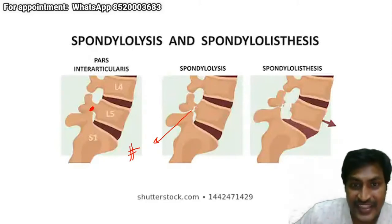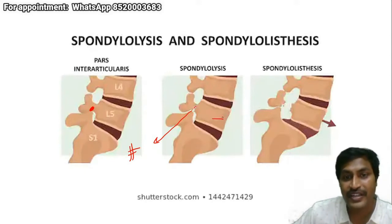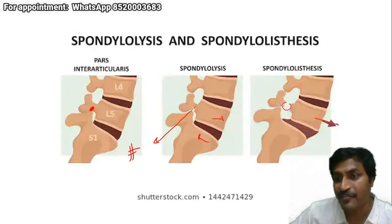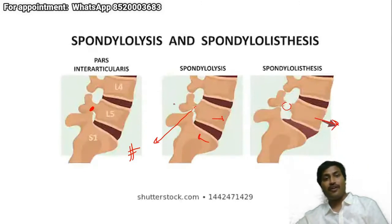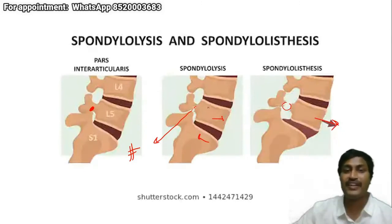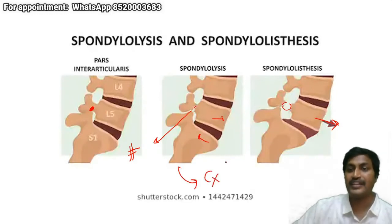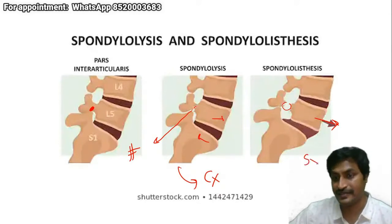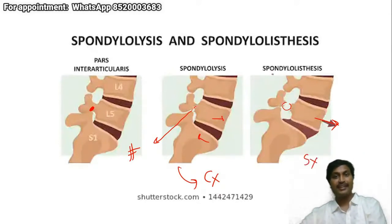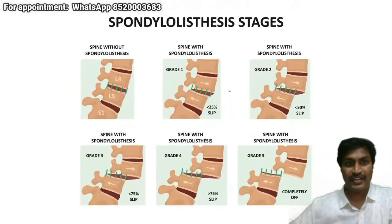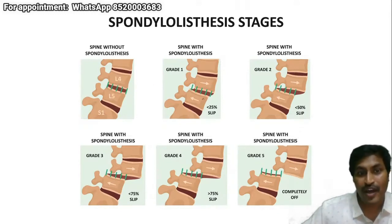I kept insisting you identify the pars interarticularis — here there is a fracture of the pars interarticularis. When there is a fracture of the pars interarticularis but no movement of one vertebra over the other, this is spondylolysis, managed conservatively. When there is a fracture of the pars interarticularis AND movement of one vertebra over the other, this is spondylolisthesis, which requires surgery.